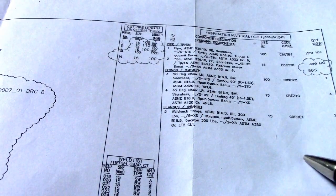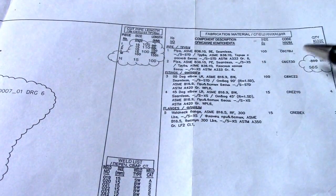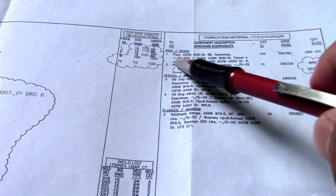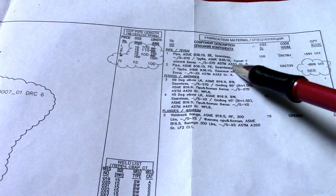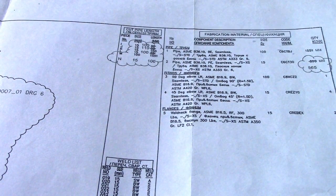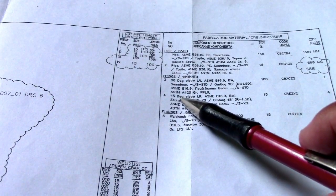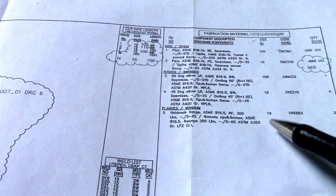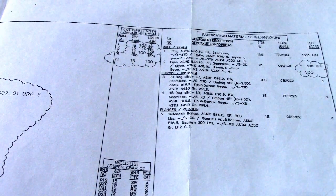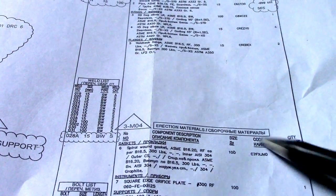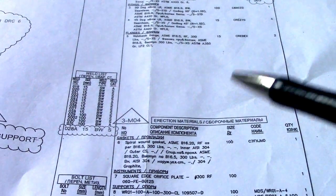This is the BOM — the Bill of Materials. The Bill of Materials shows the type of materials, size, code, and quantity. Size 100, the fitting here — 5 pieces. This is ASTM A53 grade B, P&ID 5P. This is a weld list. This portion is for the erection materials: gaskets, instrument supports, and bolts.